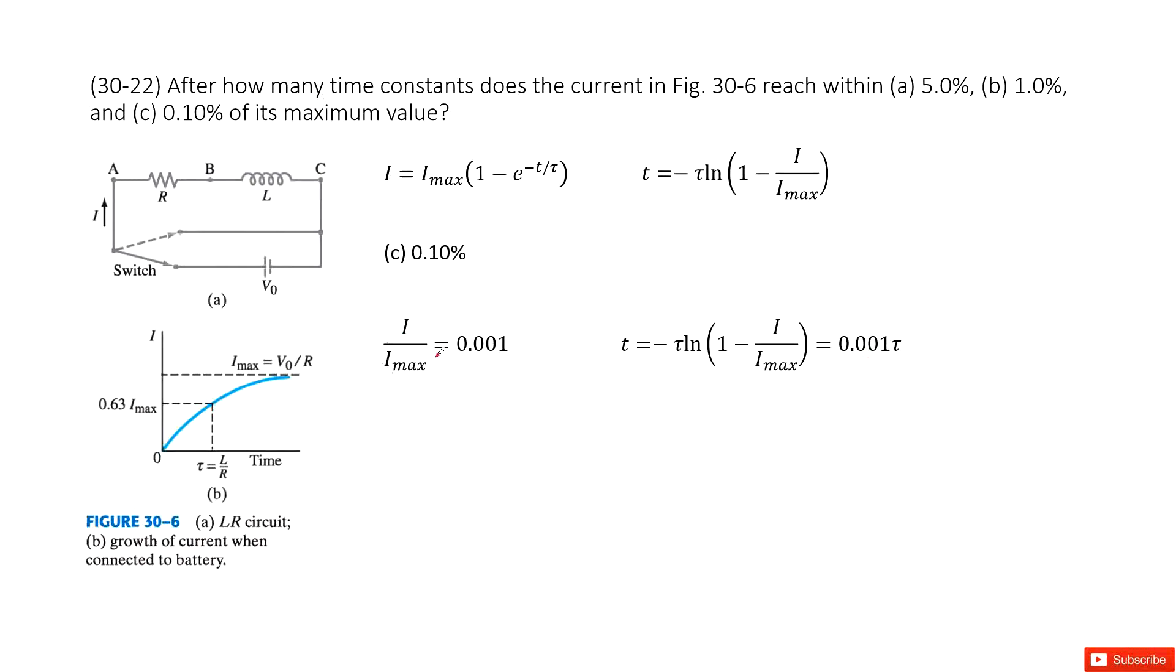Similarly, when I over Imax reaches 0.001, this is a very small number, and we input this ratio in this function for t. We find this is the smallest number. This is at the very beginning, so this matches the picture.